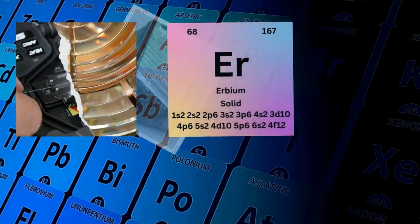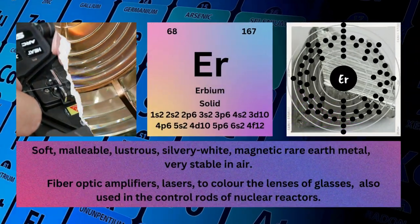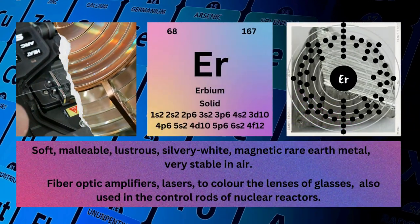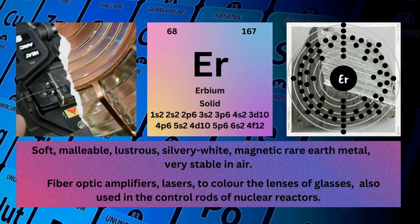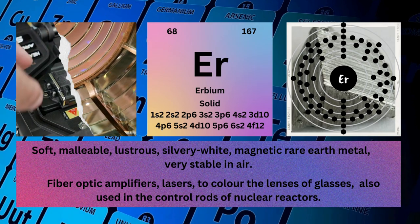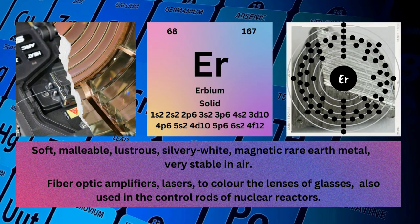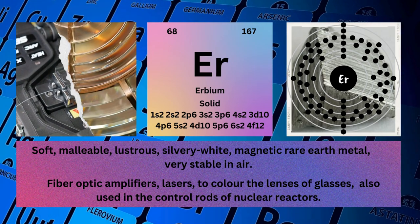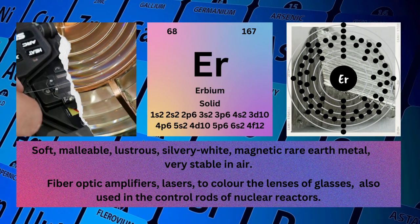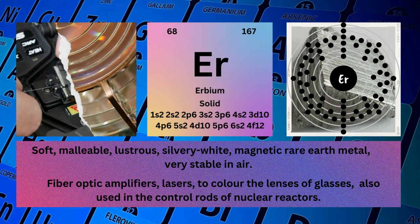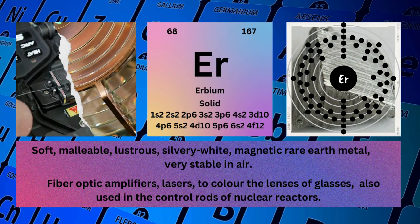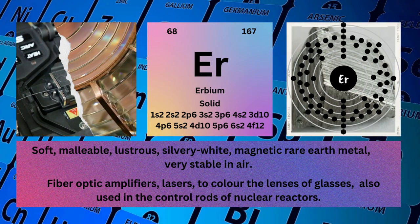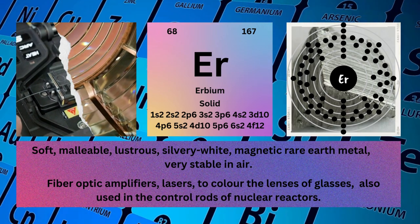Erbium. Atomic number: 68. Mass number: 167. Symbol: Er. State: Solid.